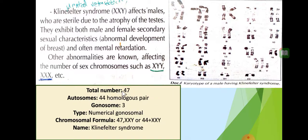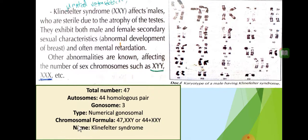For Klinefelter syndrome, the total chromosome number is 47. The autosomes are 44 homologous pairs, and the gonosomes are three — one X, one X, one Y. The type is numerical gonosomal, related to chromosome number: normal is 46, here it is 47. The chromosomal formula is 47, XXY or written as 44 + XXY. The name is Klinefelter syndrome.